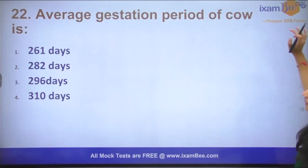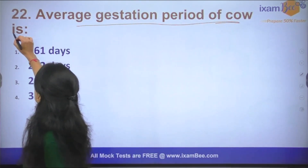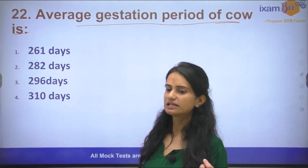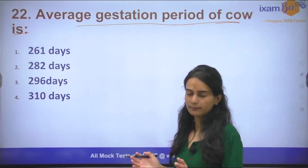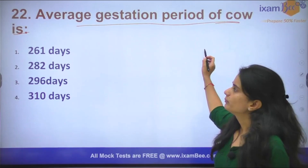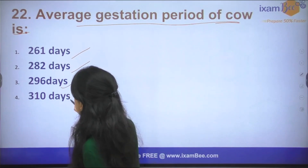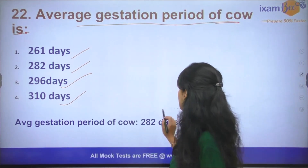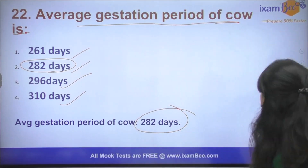The next question: Average gestation period of a cow is how many days? The gestation period is the time from fertilization until the calf is formed inside the cow's body. The options are 261 days, 282 days, 296 days, or 310 days. The correct answer is 282 days.